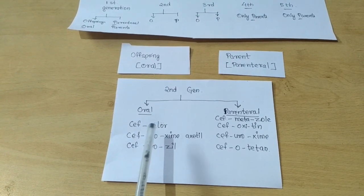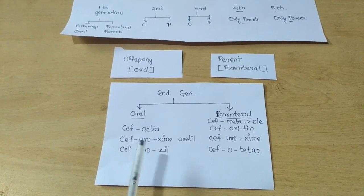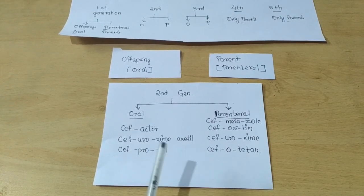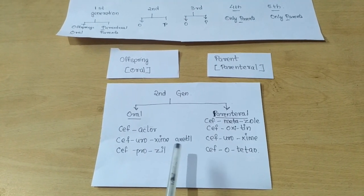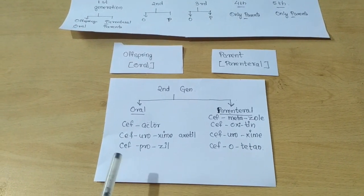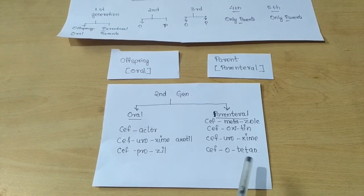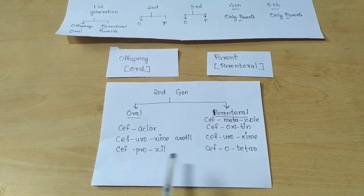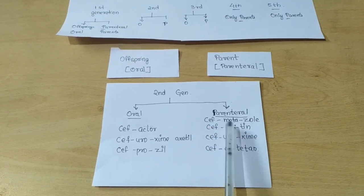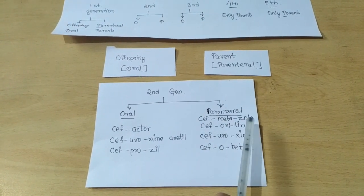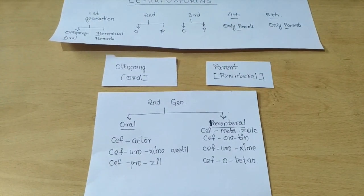To recap the second generation drugs: Cefaclor — actor's father keeps ox in a tin — and Cefoxitin. Second pair: father-son duo earning euros with surname zyme, son uses 'ex' perfume till last drop — Cefuroxime axetil (oral) and Cefuroxime (parenteral). Third: professional offspring at Zil automobile company, father wears Titan watch — Cefprozil and Cefotetan. All three parenteral drugs are governed by aneta, giving Cefmetazole. In the next video we will cover third generation cephalosporins. Thank you for watching.